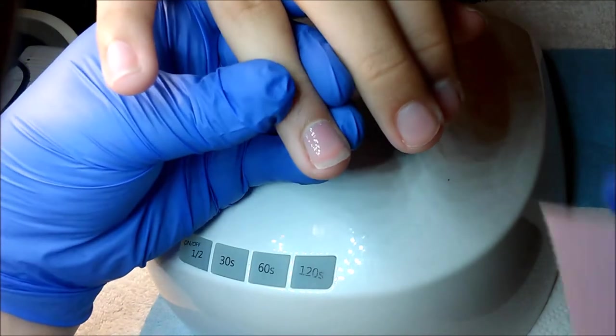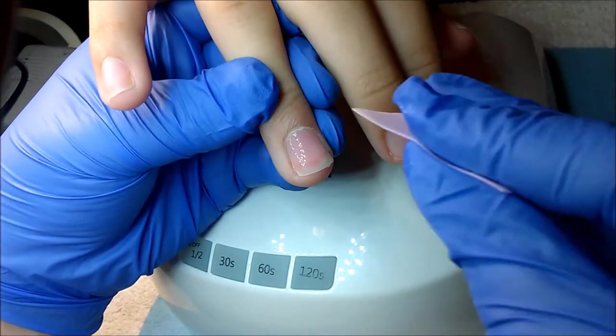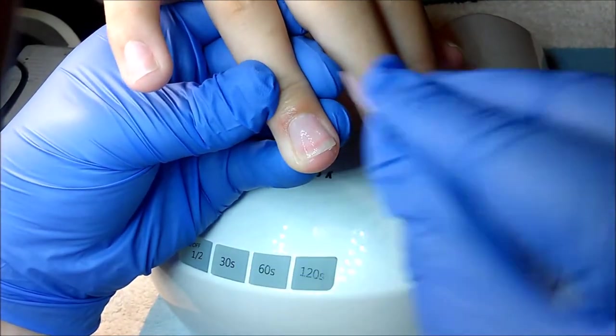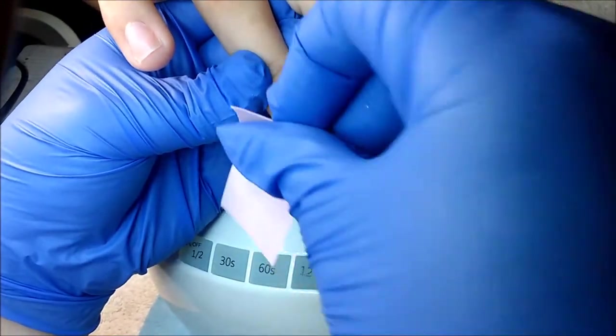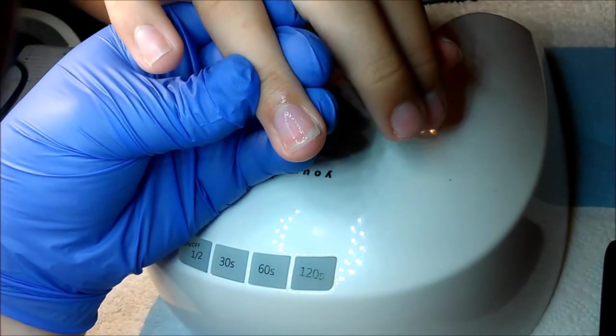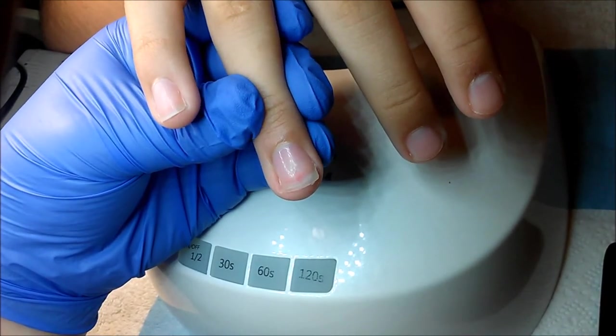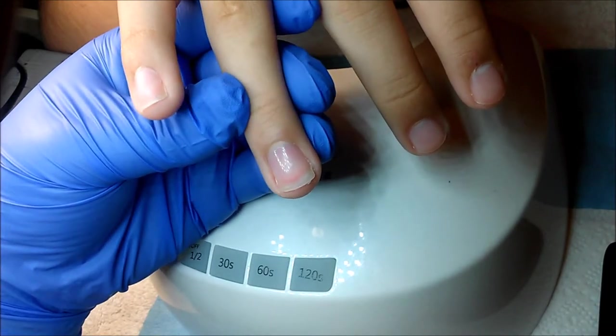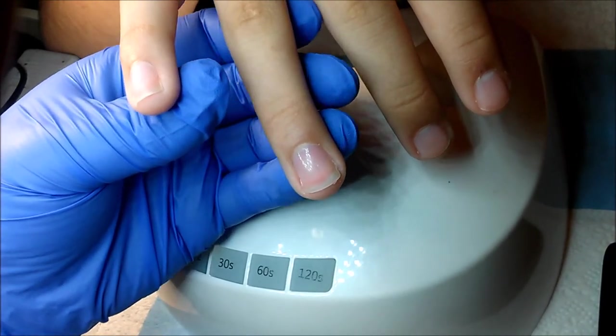Okay, 30 seconds. Now for this process, after you apply your base coat, you have to remove the inhibition layer that's left. You do not want to apply your lacquer on top of the inhibition layer. And I am not using a dry wipe. I am using a cleanser product.